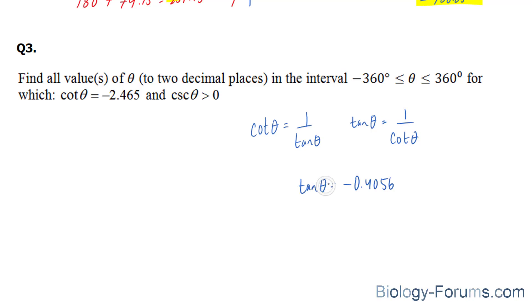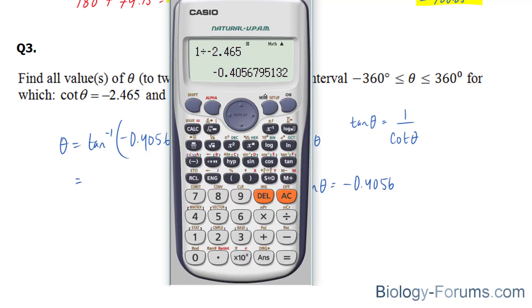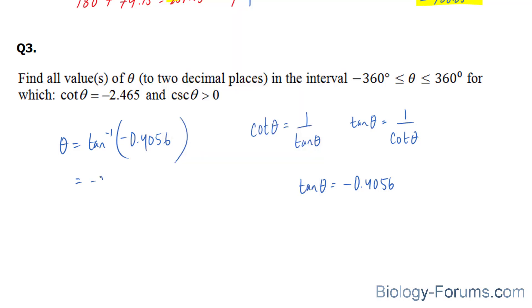1 divided by negative 2.465 equals tangent theta negative 0.4056. Let's find out what the angle for this ratio is. The angle for that ratio is negative 22.07 degrees.